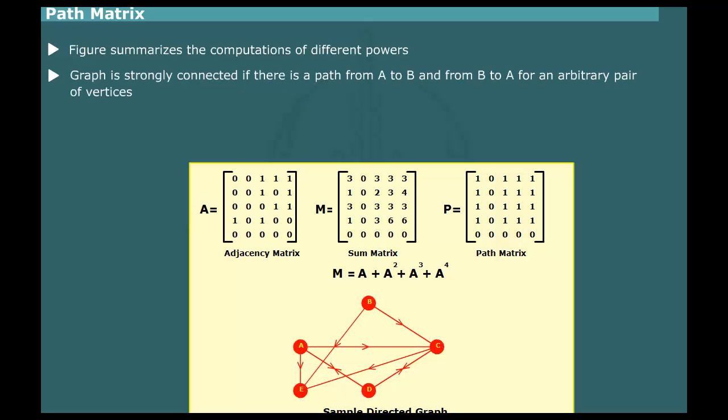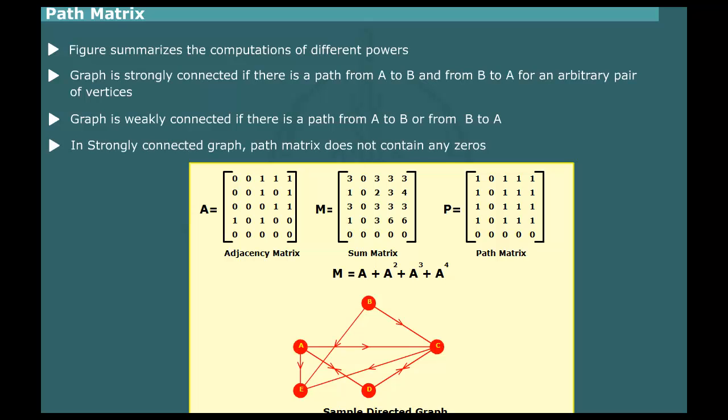A graph is said to be strongly connected if, for any pair of vertices A and B, there is a path from A to B, and there is also a path from B to A. The graph is said to be weakly connected if there is a path from A to B, or there is a path from B to A. This means that for a strongly connected graph, the path matrix does not contain any zeroes. The path matrix shown in the preceding example is weakly connected because there are several zeroes in the matrix.